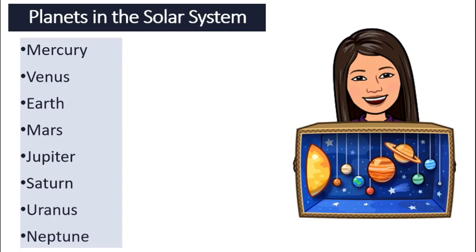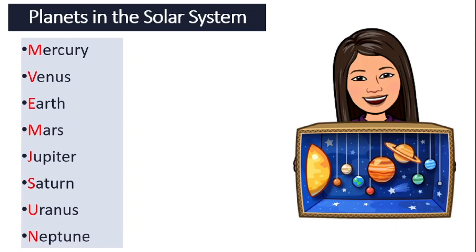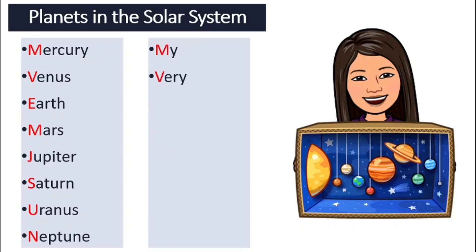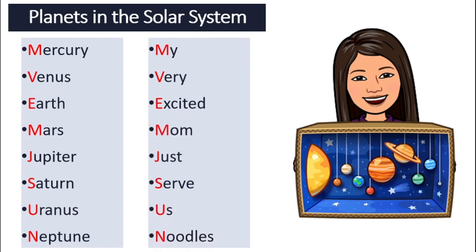So how can we remember all our planets in order? We can make up a sentence by using all the first letters of each planet. Here is our sentence: My very excited mom just served us noodles.